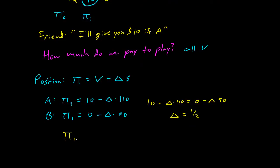So now we know that pi_1 equals negative 1/2 times 90, and the important bit is there's no uncertainty.